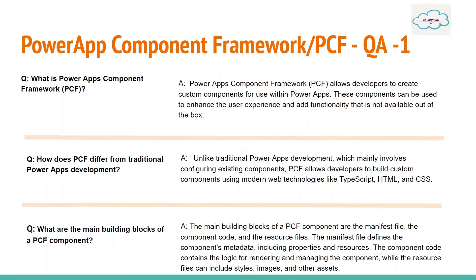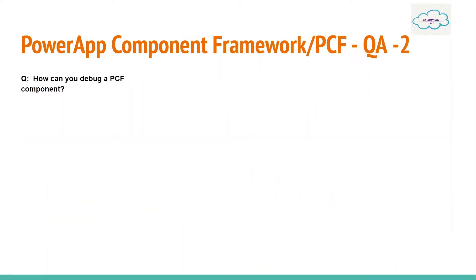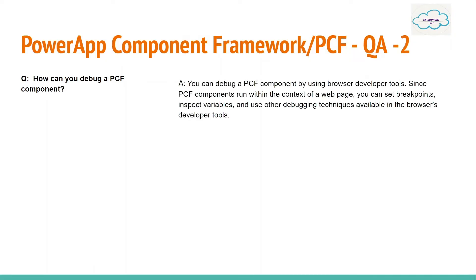The main building blocks of a PCF component are the manifest file, component code, and resource files. The manifest file defines the component's metadata including properties and resources. The component code contains the logic, and the resource files contain stylesheets, images, and other assets. Question: How can you debug a PCF component?